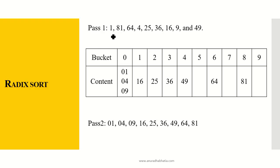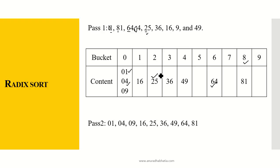Now let's start putting the numbers into the buckets with respect to the output from pass 1. 01, as it is a single digit we treat it as 01 — the most significant bit is 0, so it goes into bucket 0. 81 — we now consider the next bit, which is 8, so it goes into bucket 8. 64 — we consider 6, so it goes into bucket 6. 04, treated as 04 — it comes in bucket 0. 25 — MSB is 2, so it goes into bucket 2. 36 goes into bucket 3. 16 — the bit is 1, so goes into bucket 1. 9, treated as 09, goes into bucket 0. 49 goes into bucket 4.